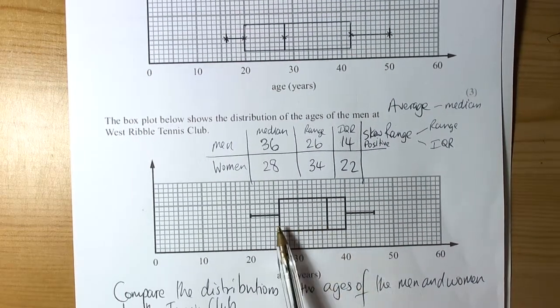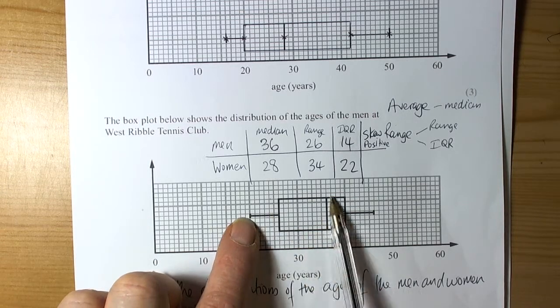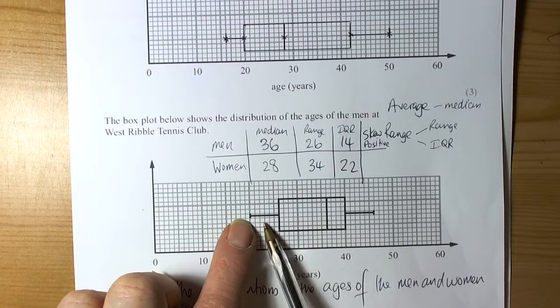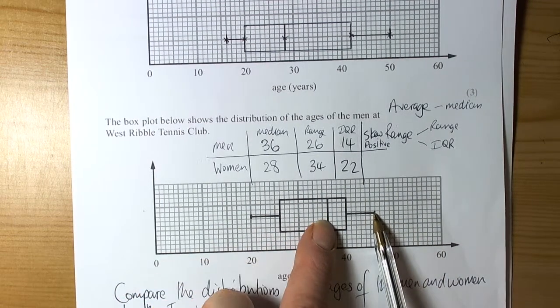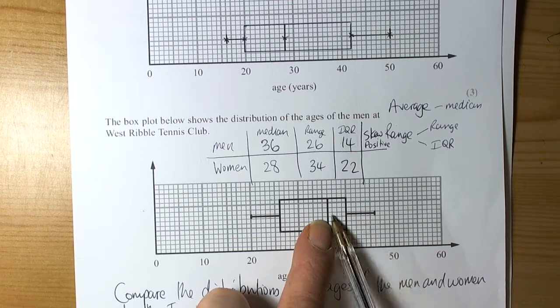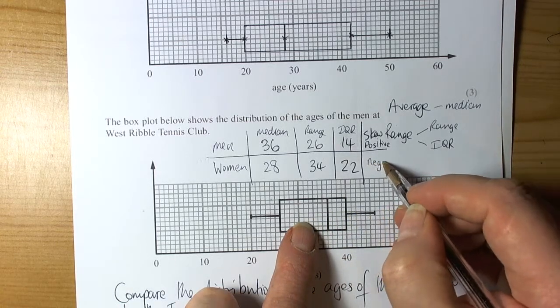When we look at the men's box plot, we can see that it's gone the other way around. The spread and distribution of the lower 50% of the data is wider, and the upper 50% of the data, the spread is less. So, this is called negative skew. So, it's been negatively skewed.